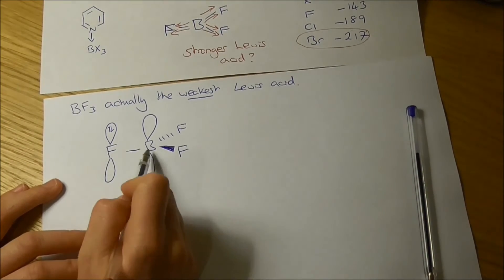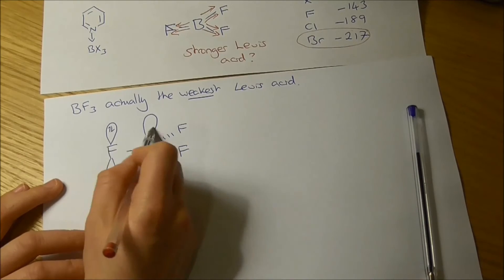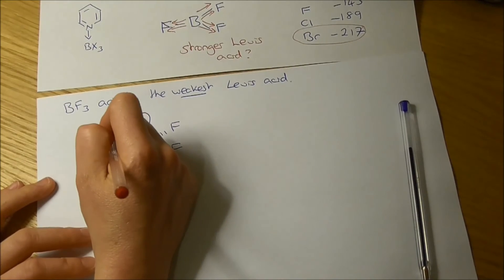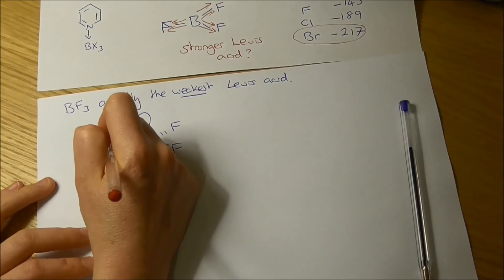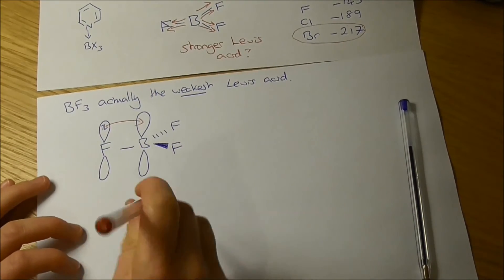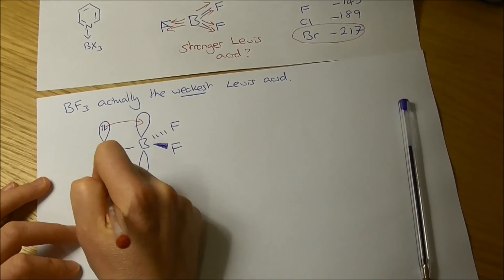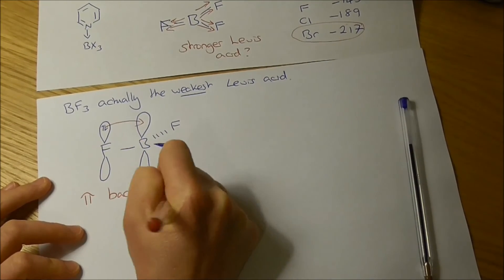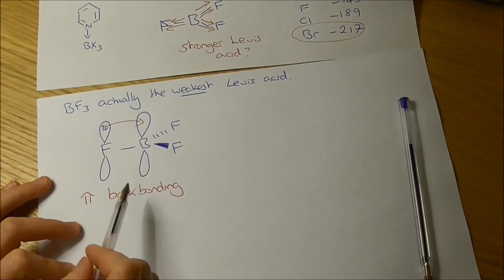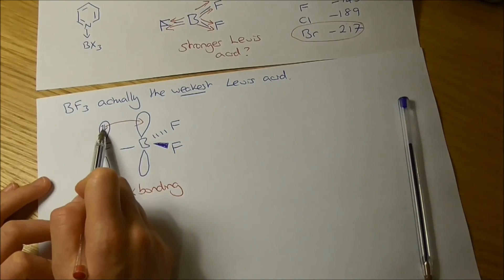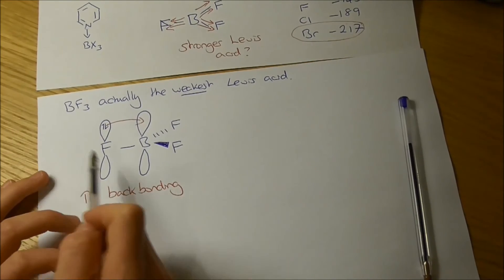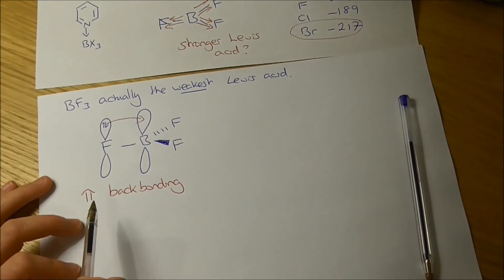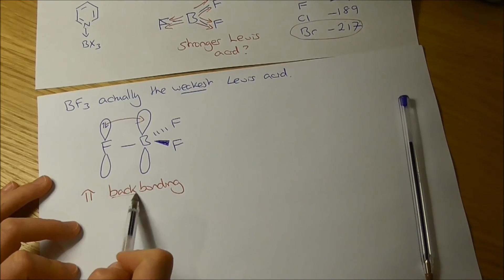Fluorine's really small, and boron's really small, so actually these p orbitals can overlap. So just as you'd get a pi bond, in this case, you're sharing two electrons from that orbital back into that boron orbital, and we call this pi backbonding. It's a bit different from a normal pi bond. In a normal pi bond, you'd have one electron here and one electron here, and they'd be shared. In this case, both electrons are on the fluorine, and they're being shared into the boron, so we call it pi backbonding.